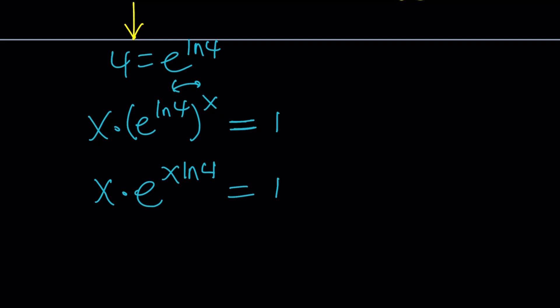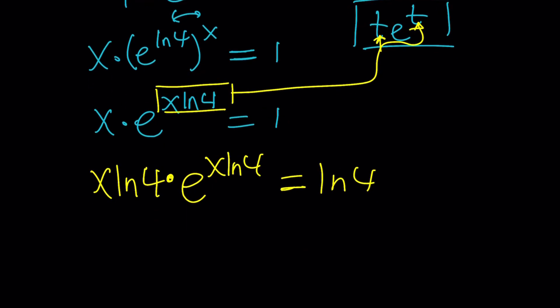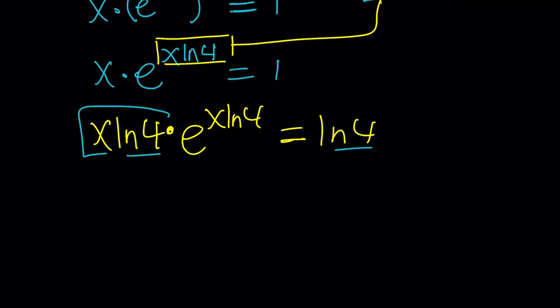Here's where we do the magic touch, or should I say Lambert touch, right? So since we want to put it into the form te to the t, this is going to be our t. Our t is x ln 4. So I do need to multiply both sides by ln 4, which you can do just by multiplying both sides by ln 4. 1 times ln 4 is ln 4. So notice that we just multiply by ln 4 here and here. And now this is going to be our t, right? And we have t to the t. This is the time to apply Lambert's w function.